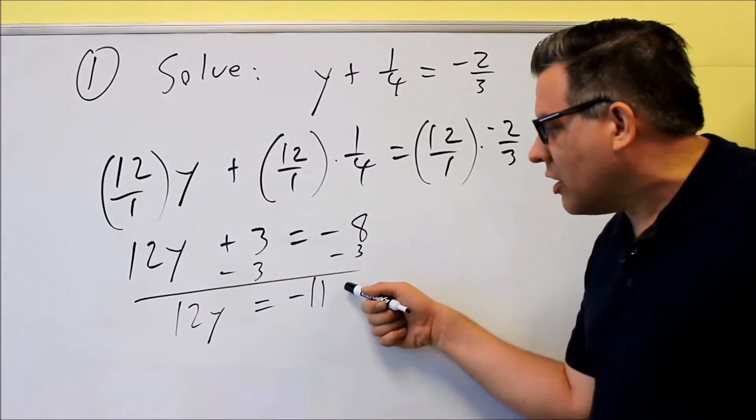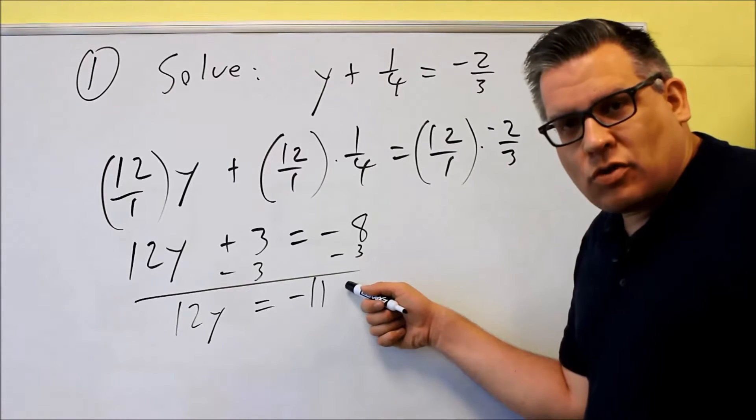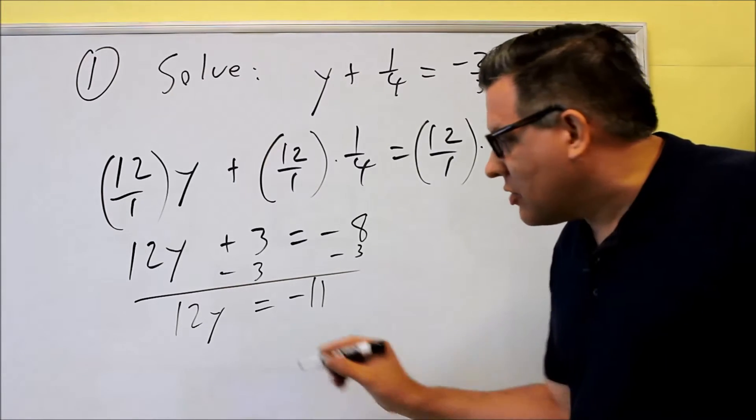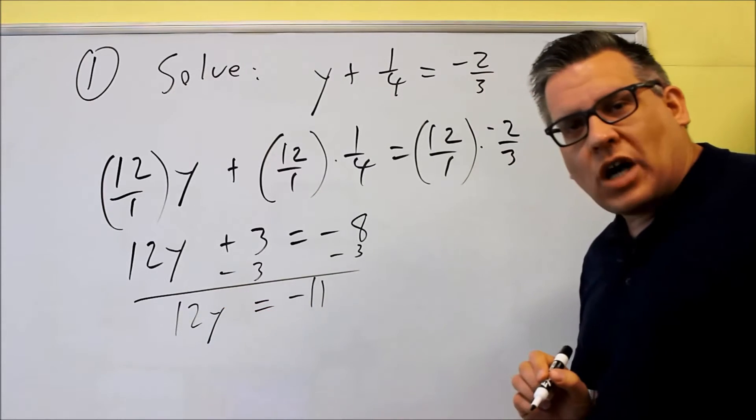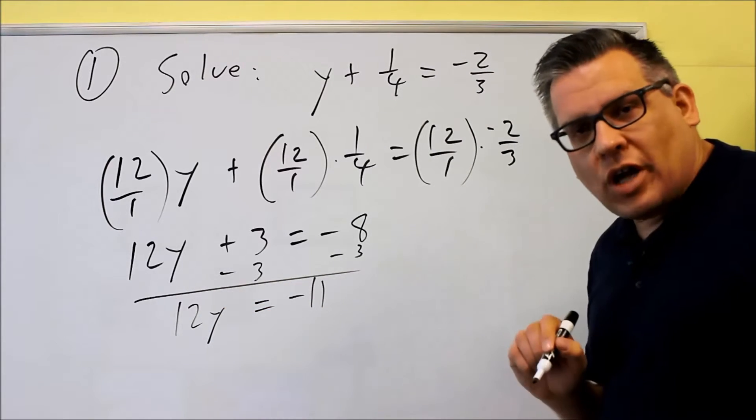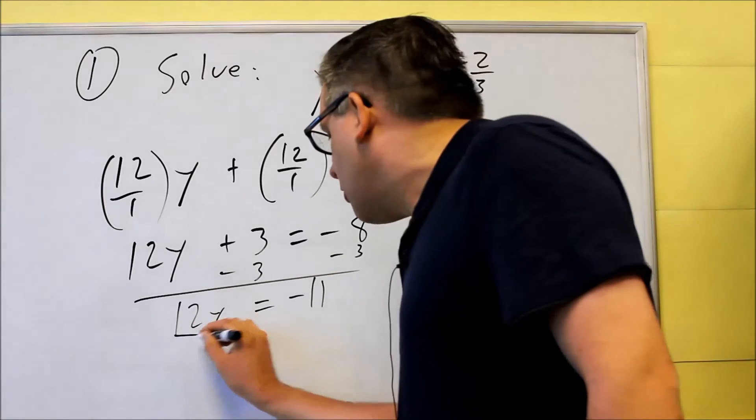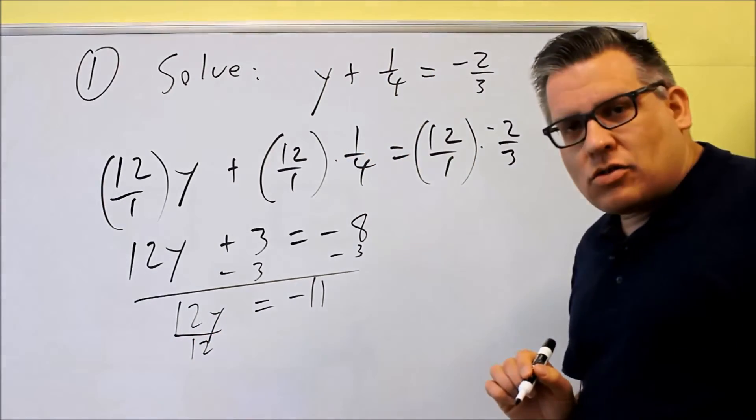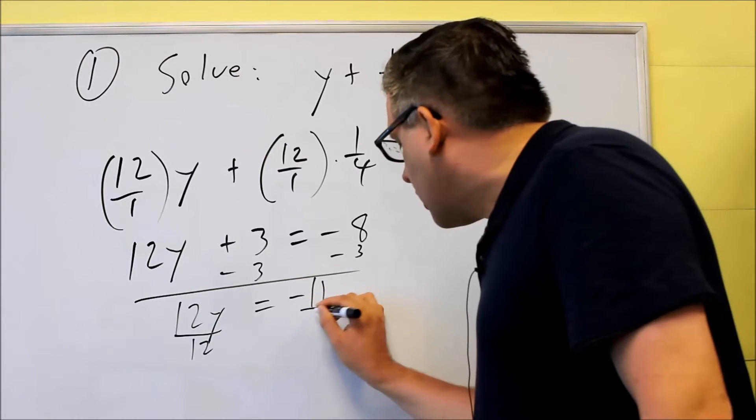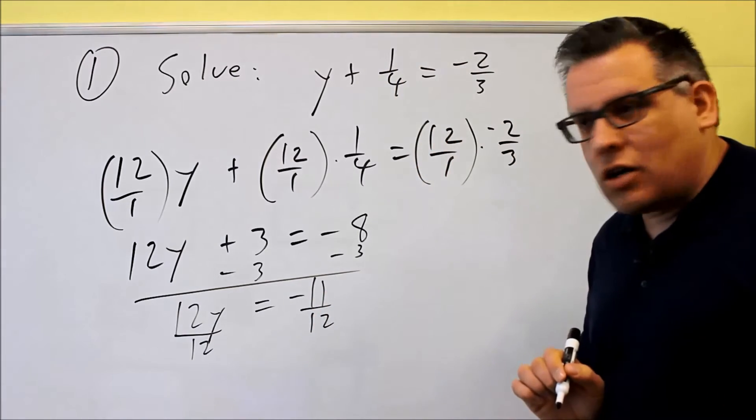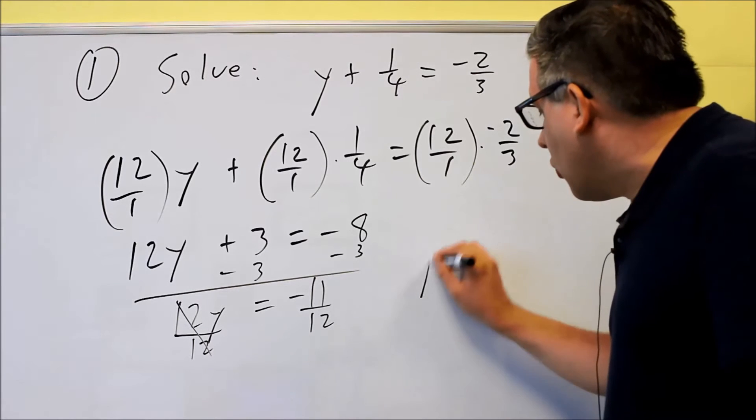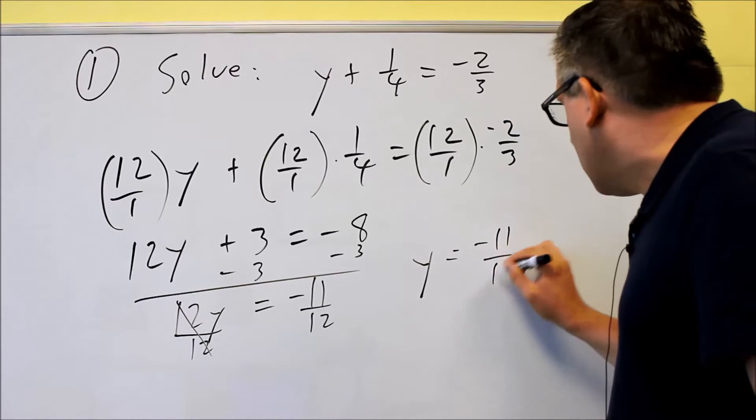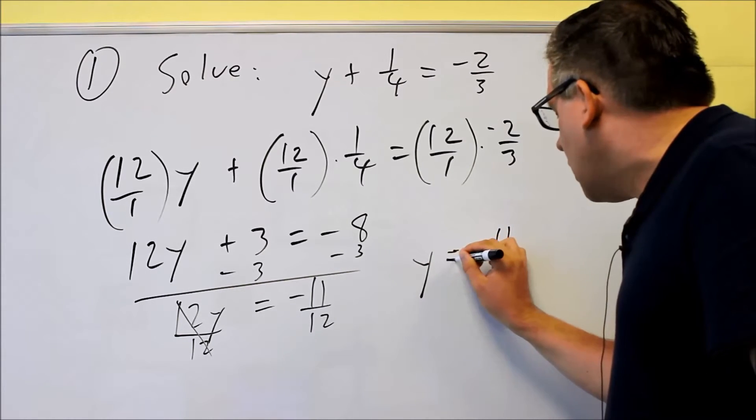The last thing I'm going to do is I need to do the opposite operation of multiplication. I have a 12 times y that's there. I want to do the opposite operation and that's going to be to divide. So I'm going to divide this side by 12. When I do to one side I must do to the other side as well. By doing that, the 12s are going to cancel out and I get y = -11/12.